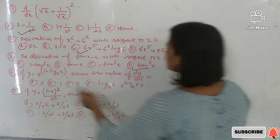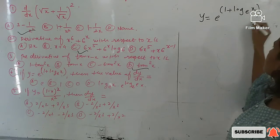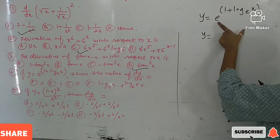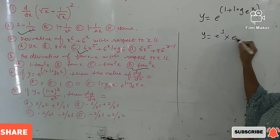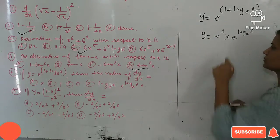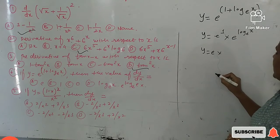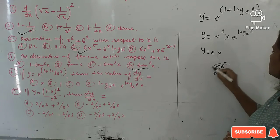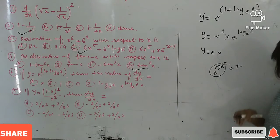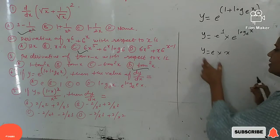Next question: y = e^(1 + log_e x). First simplify: separate the exponent to write y = e¹ · e^(log_e x). Now e¹ = e, and e^(log_e x) = x, since the exponential and logarithm cancel. So the simplified form is y = e·x.